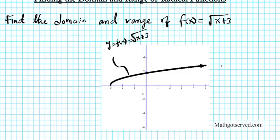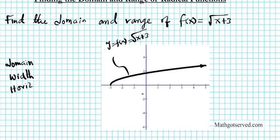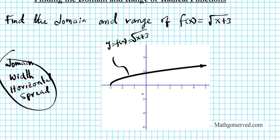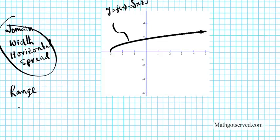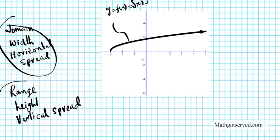One thing to remember is that the domain is like the width of the function — how wide it is, or the horizontal spread. When you think about the range of a function, think about the height or the vertical spread — how high or how low does it go. These two ideas apply to reading domain and range from the graph.